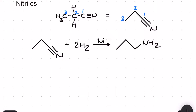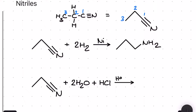The first nitrile reaction should be familiar because it's very similar to how an alkene becomes an alkane: the nitrile reacts with hydrogen in the presence of a nickel catalyst to form a primary amine. For the second reaction, the nitrile reacts with water and HCl in the presence of some heat to make a carboxylic acid and some ammonium salt. This one is very poorly remembered, so keep an eye on it.